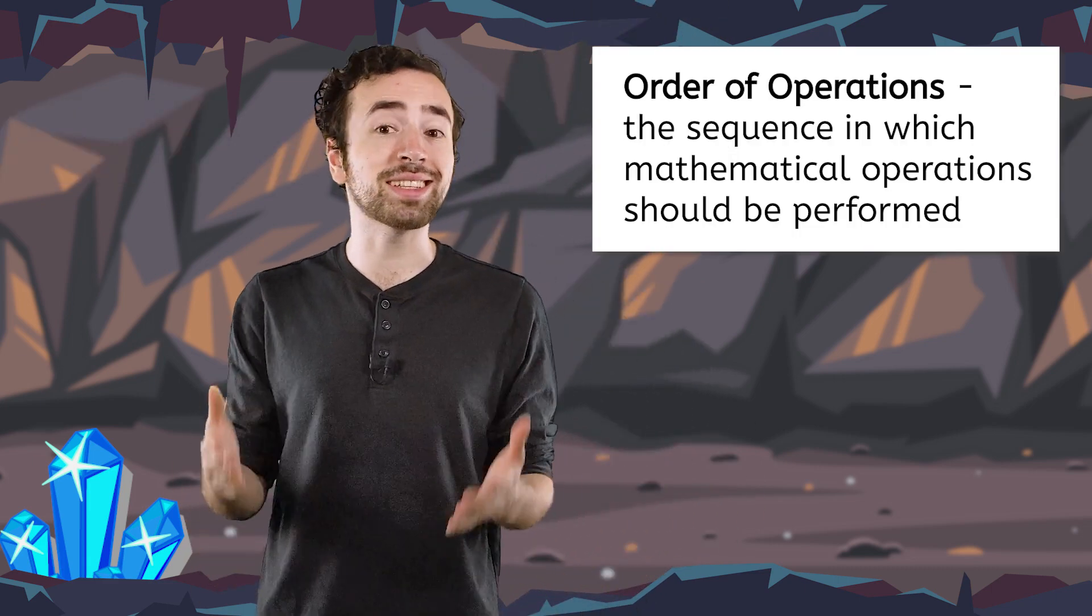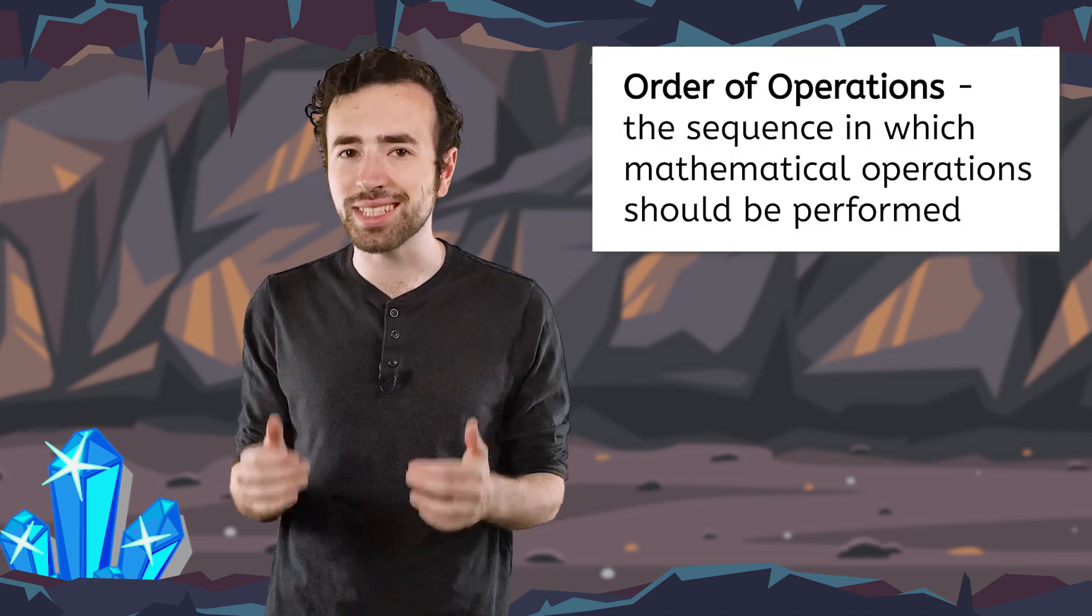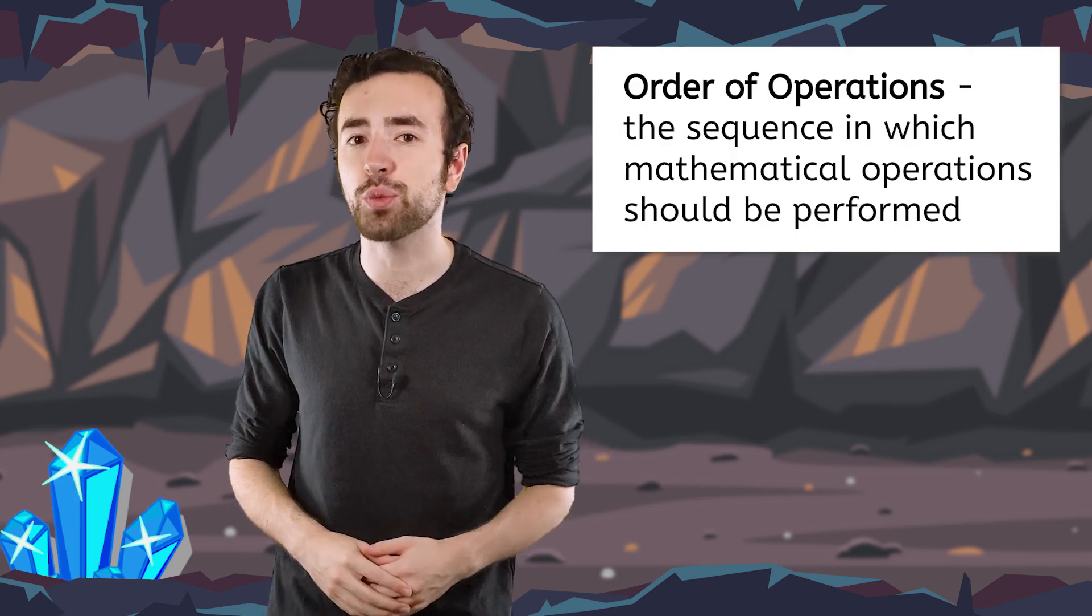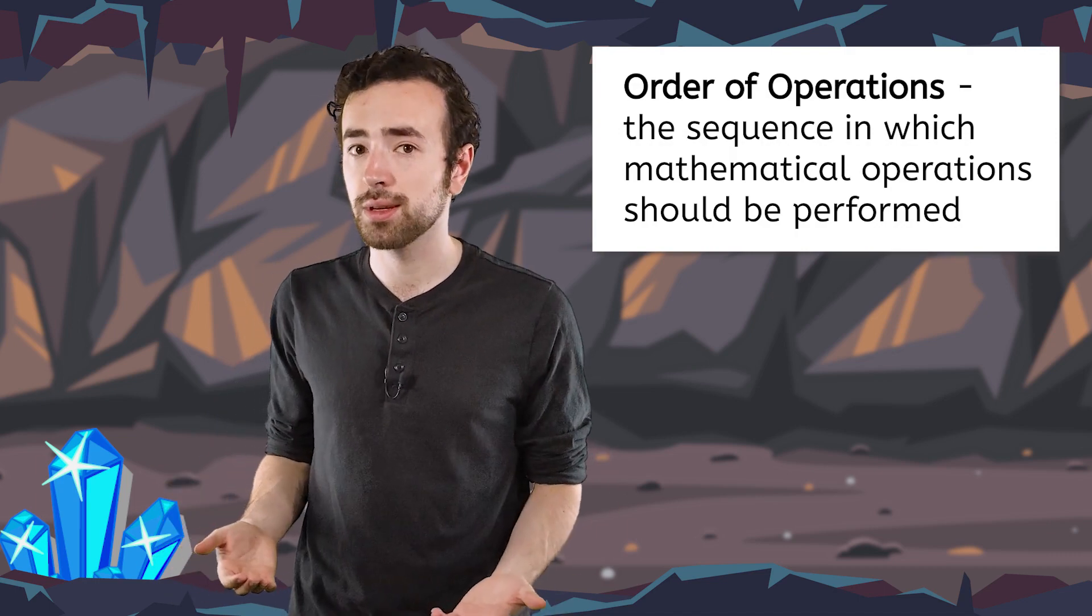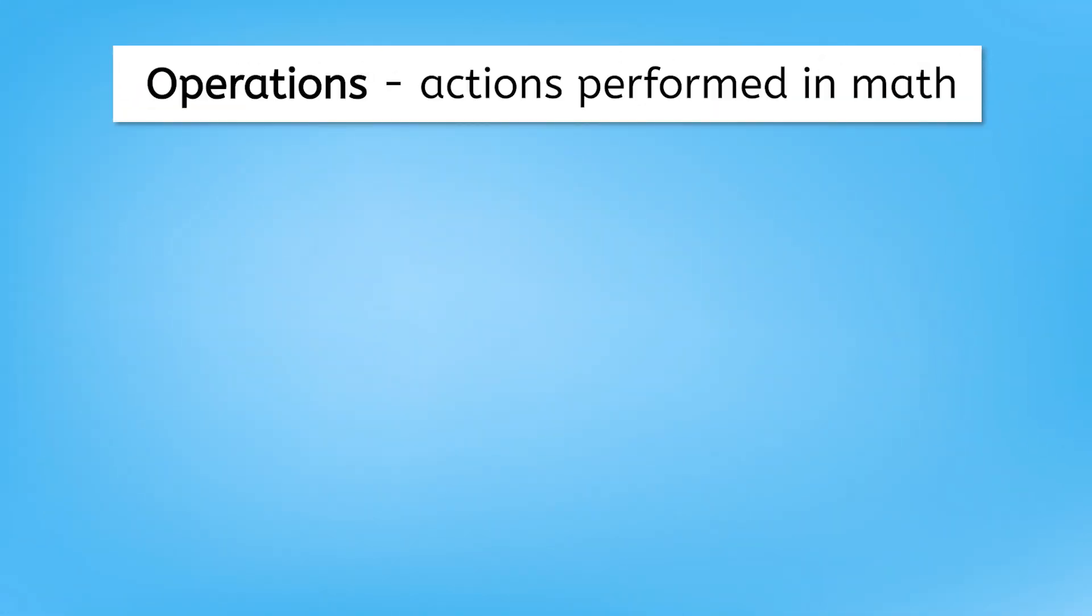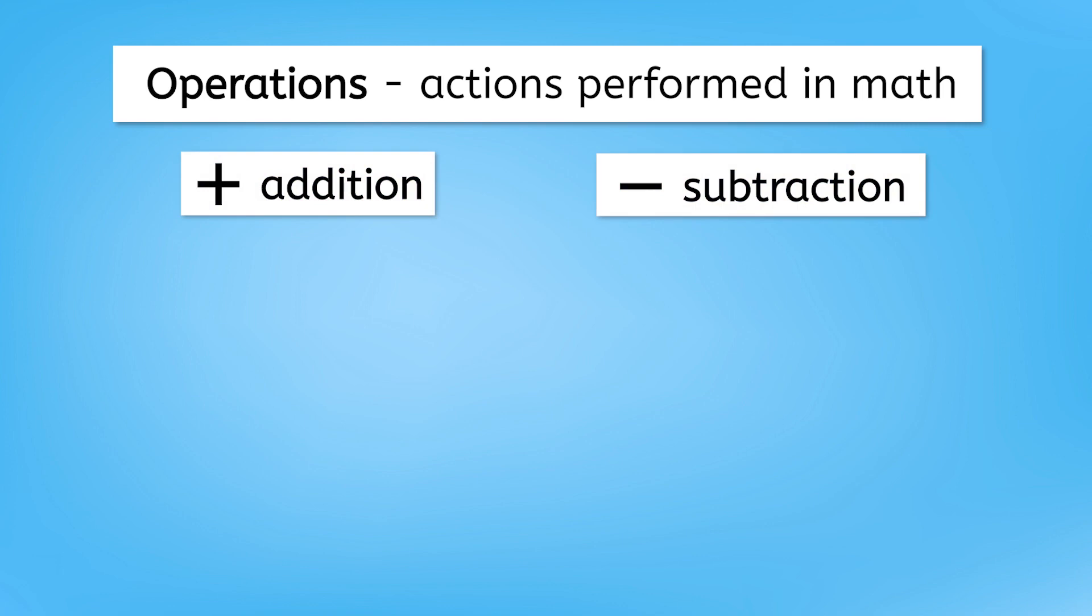The order of operations is a set of rules that tell us the sequence in which mathematical operations should be performed. Operations are the actions we perform in math, such as addition and subtraction. Can you think of any other operations? Pause the video while you brainstorm and jot down ideas in your guided notes.